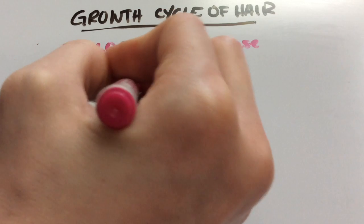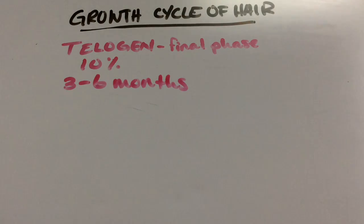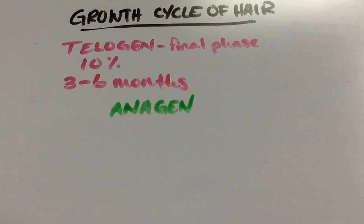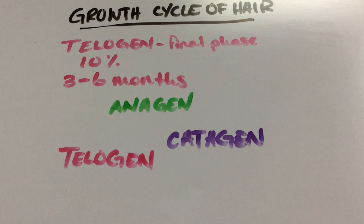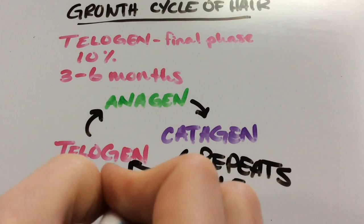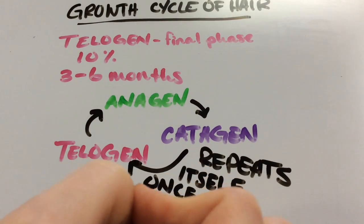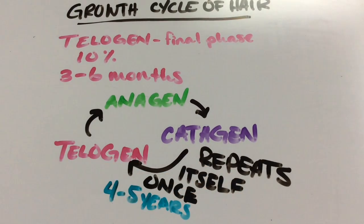As far as hair loss is concerned, we used to think we lost 100 to 150 hairs per day, but recently it's been discovered that the average is closer to 35 to 40 hairs per day. As soon as the telogen phase ends, the hair returns to the anagen phase and begins the cycle all over again. On average, the entire growth cycle repeats once every four to five years.